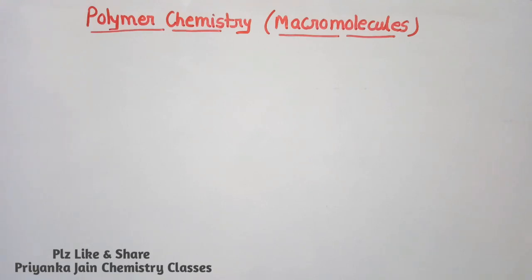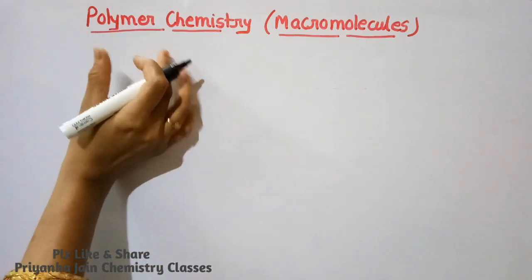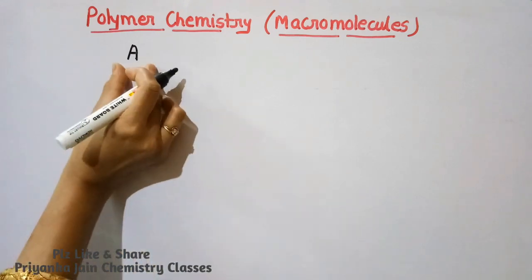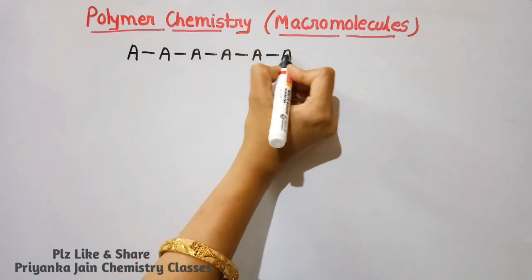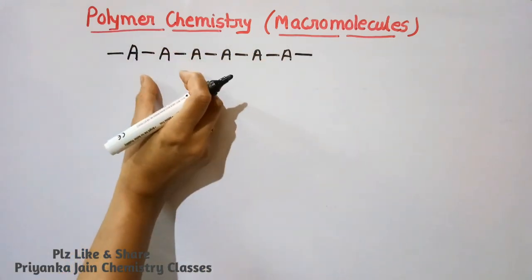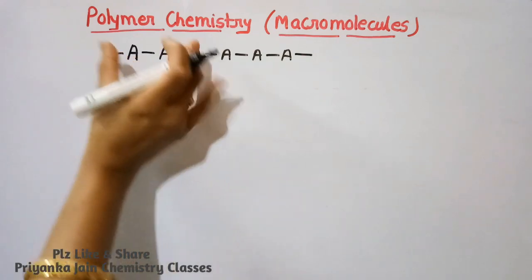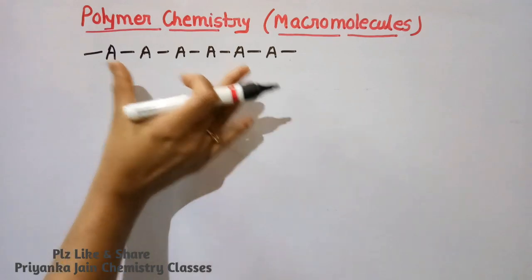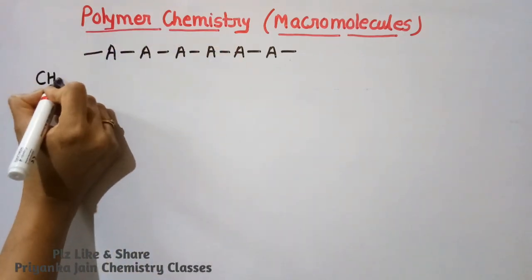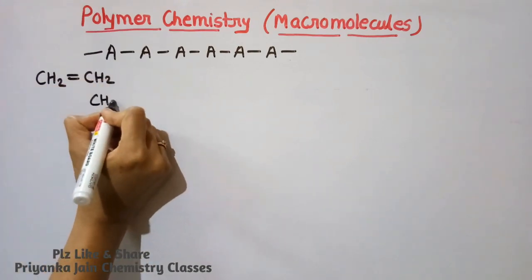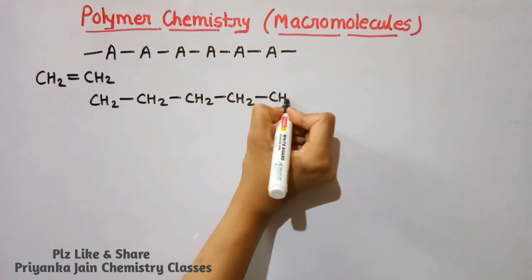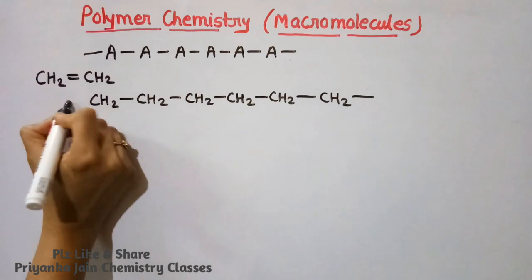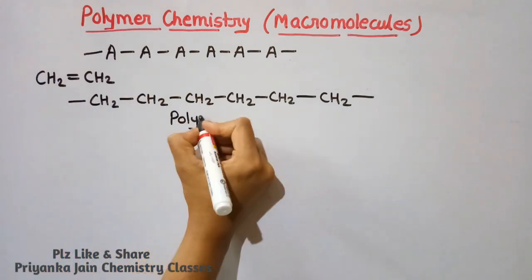First, what is a polymer? We all know about monomers — a monomer is a very small unit, and when it is repeated again and again we get a long chain with a very large molecular weight. Such compounds are known as polymers. For example, consider the ethylene molecule. When ethylene molecules are joined together linearly, we get a long chain called polyethylene, which is a polymer of ethylene.